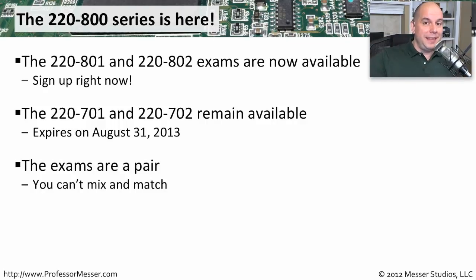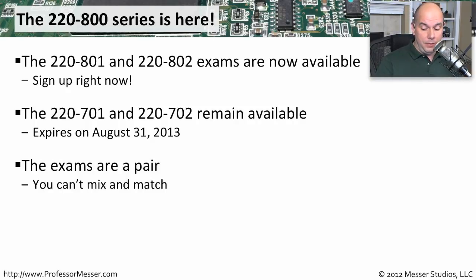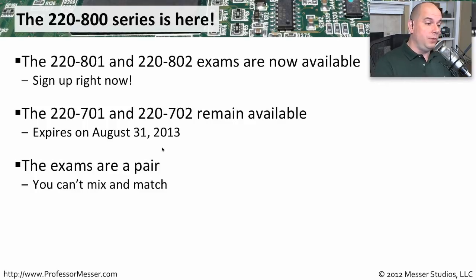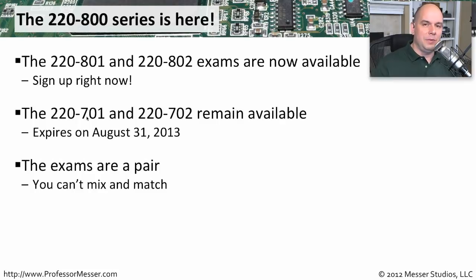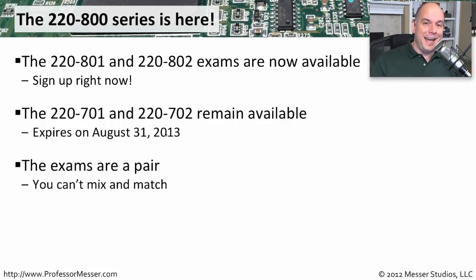If you take the 701, you cannot take the 802. Conversely, if you take the 801, you cannot take the 702. You either have to take both of the 700 series or both of the 800 series — you can't mix and match. Keep in mind that the 701 and 702 expire on August 31st. If you've taken the 701 and haven't taken the 702 by September 1st, you have to start over and take the 801 and 802. When they go away, they go away.